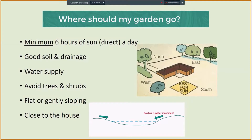Water is essential for plants. Having a hose or rain barrel near your garden is a requirement unless you have a way to transport water to your garden. Gardens may be located anywhere on your property. Having it close to your home or your organization is one way to remember to take care of your garden, as well as making it easier for people to get to the garden.